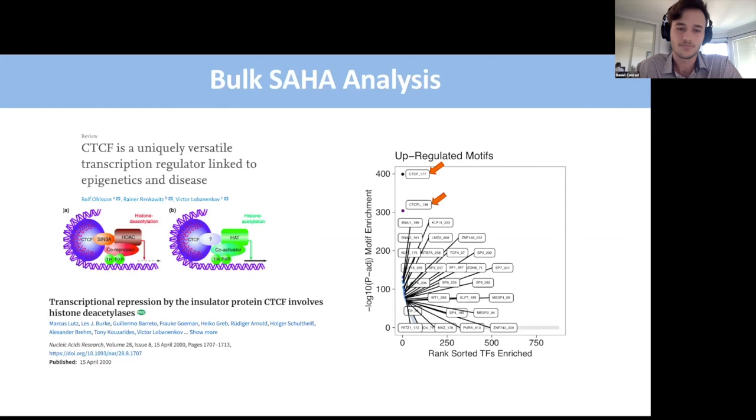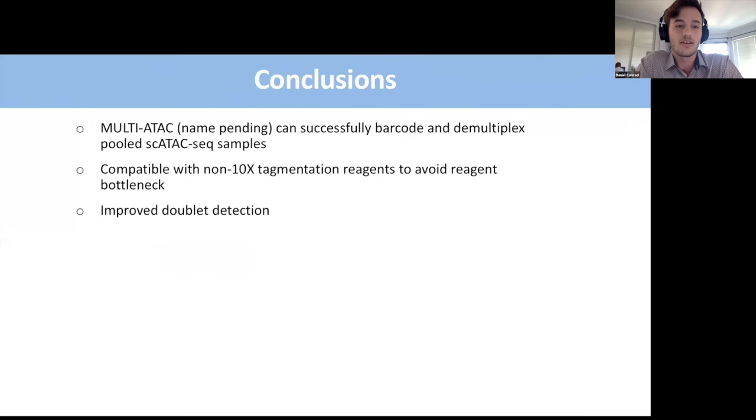In conclusion, I've shown you that Multi-ATAC name-pending can successfully barcode and demultiplex pooled single cell ATAC-seq samples. This is compatible with non-10X tagmentation reagents, either from other vendors or presumably homebrew as well, to avoid reagent bottleneck. And sample multiplexing improves doublet detection within single cell ATAC-seq experiments.